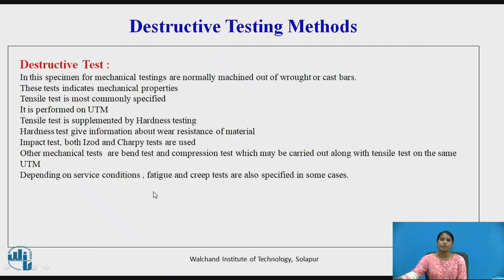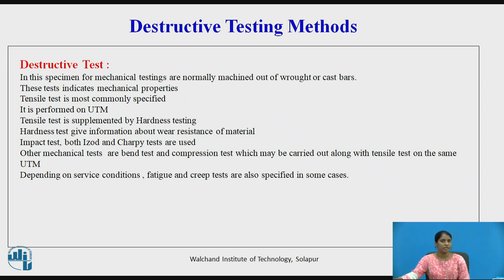Destructive testing methods: the first test is the tensile test, which is performed on a UTM — that is, a Universal Testing Machine. The tensile specimen is prepared and the test is conducted on UTM; the specimen is fixed between two jaws. The hardness test gives information about wear resistance of the material. Depending upon the service conditions, fatigue and creep tests are specified in some cases.